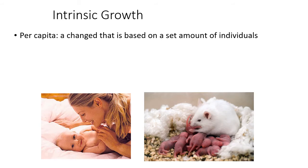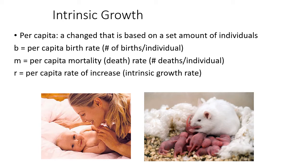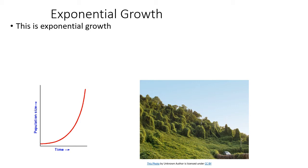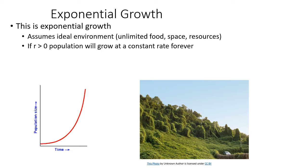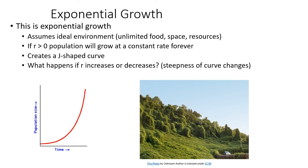Intrinsic growth looks at R, the per capita rate of increase, calculated simply as the number of births per capita minus the number of deaths per capita. So R equals B minus M. Once you have that rate, you can understand how the population is growing or dying. This is exponential growth — it assumes an ideal environment where resources are not limited. As long as you have a positive growth rate, you will have a J-shaped curve. Changing R higher or lower just changes the steepness of that curve; a negative R means a decreasing population.